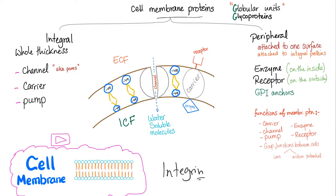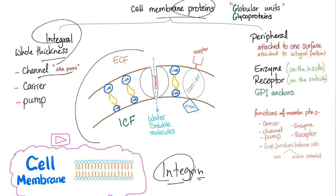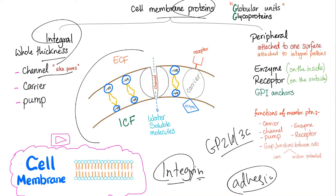Integrins are transmembrane proteins — they take the whole thickness of the membrane, and they facilitate cell-extracellular matrix adhesion. The GP2B3A will help the platelet adhere to the next platelet, and this process is known as platelet aggregation.